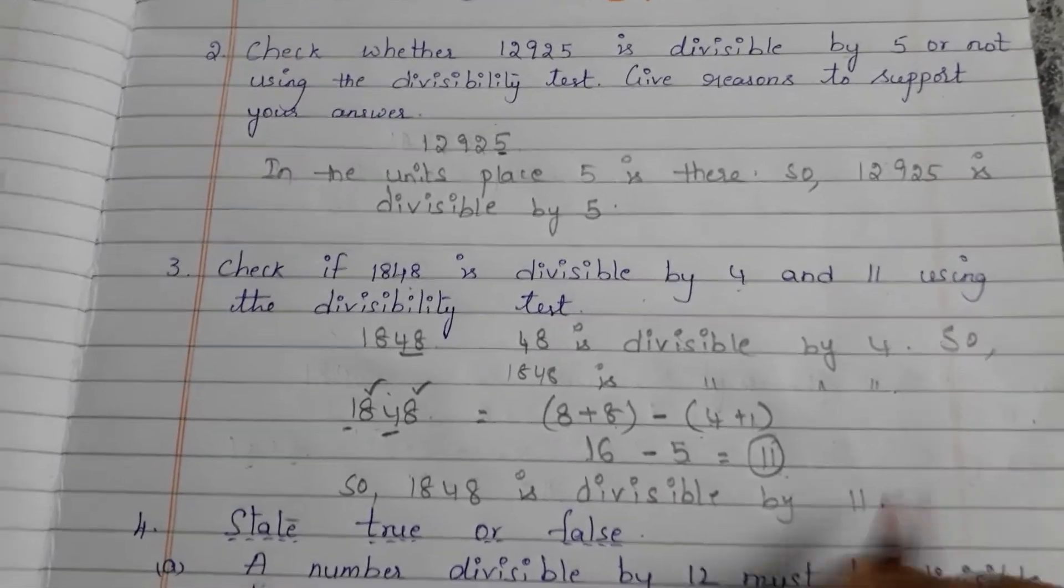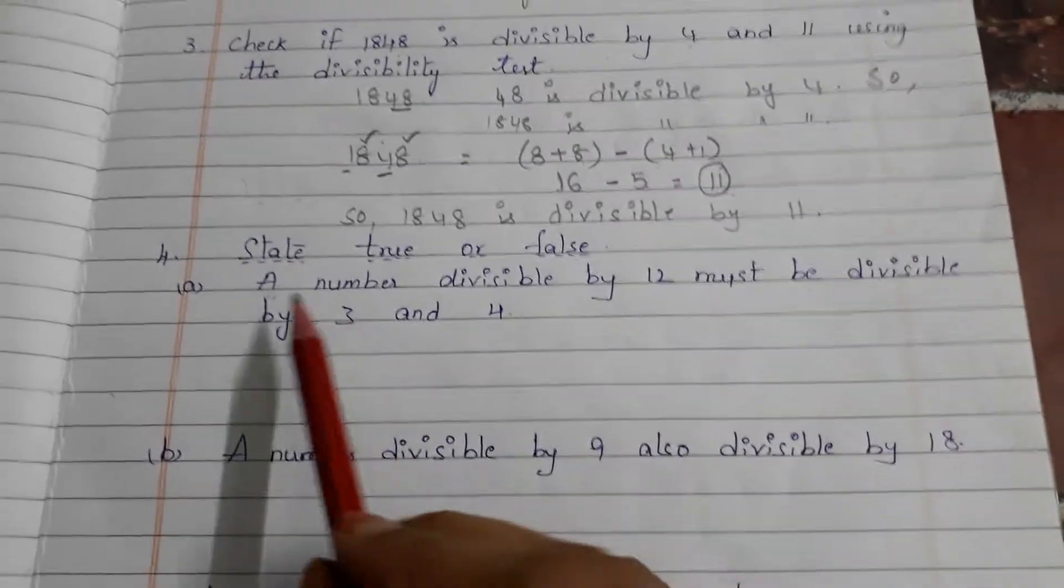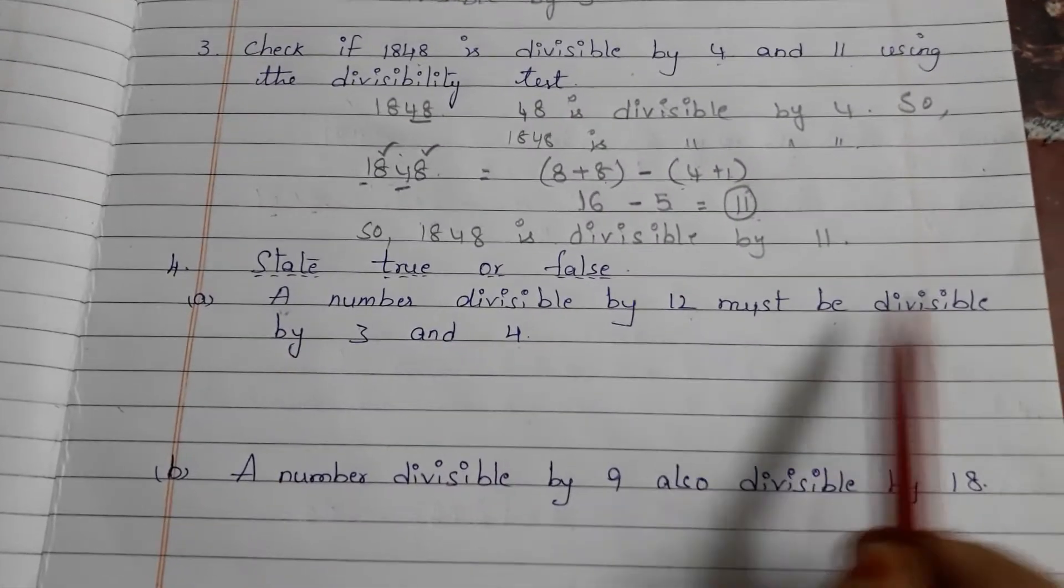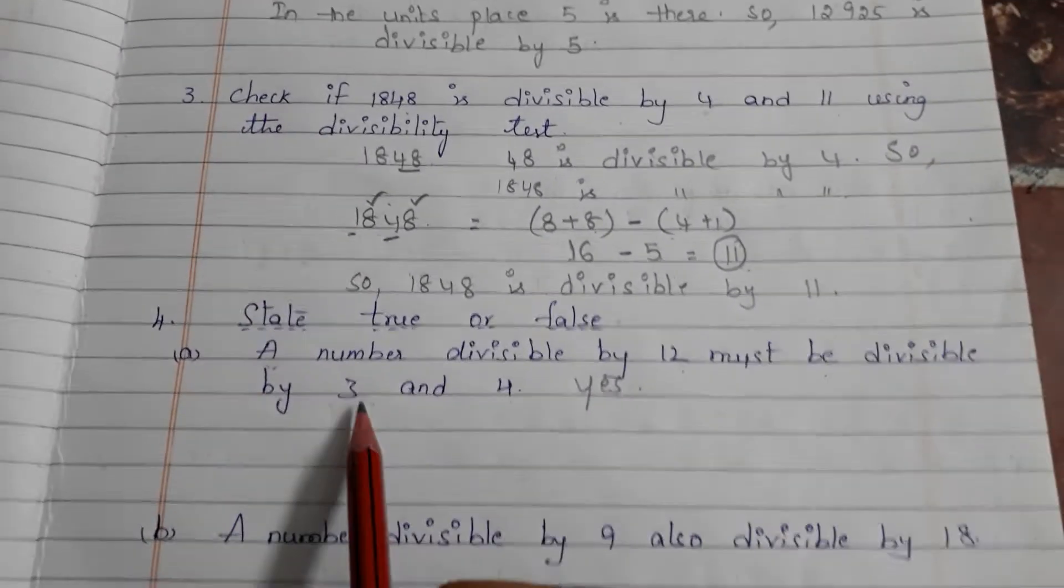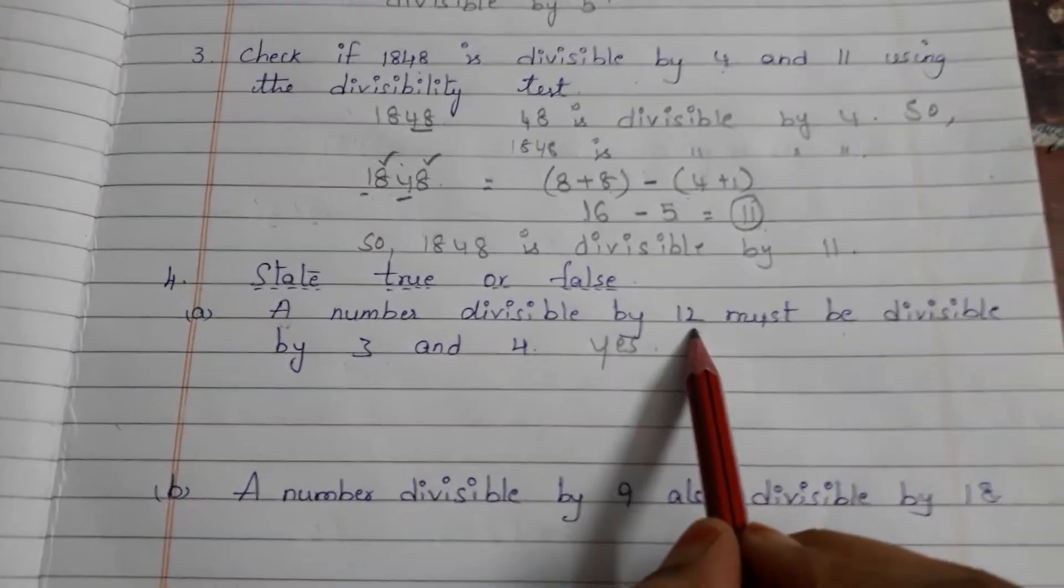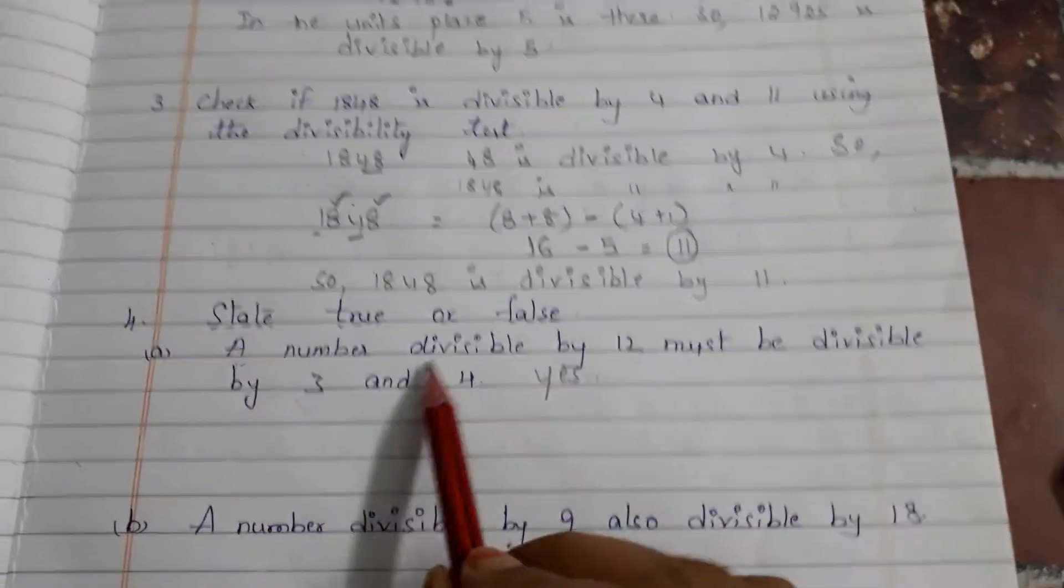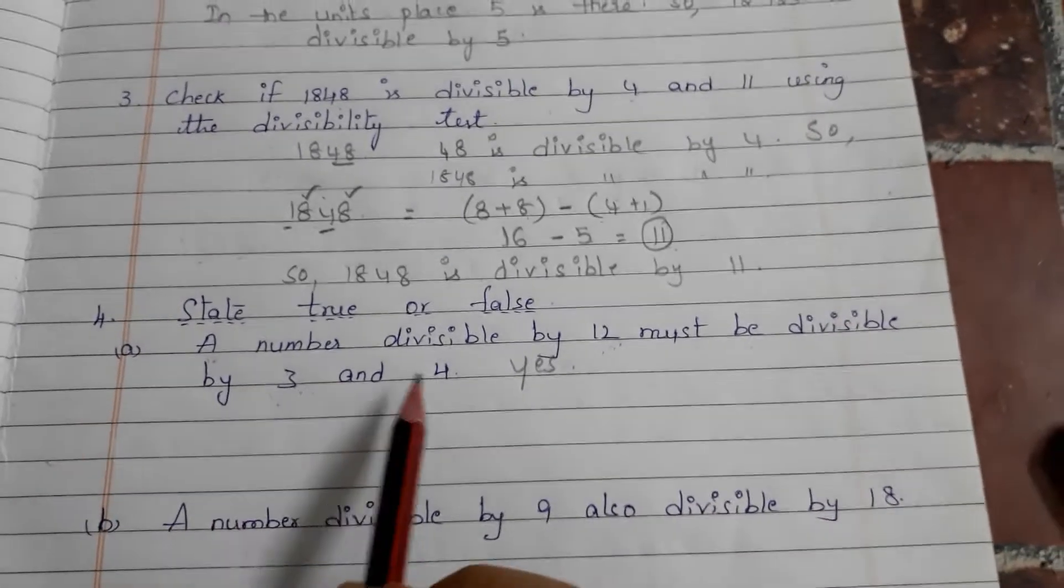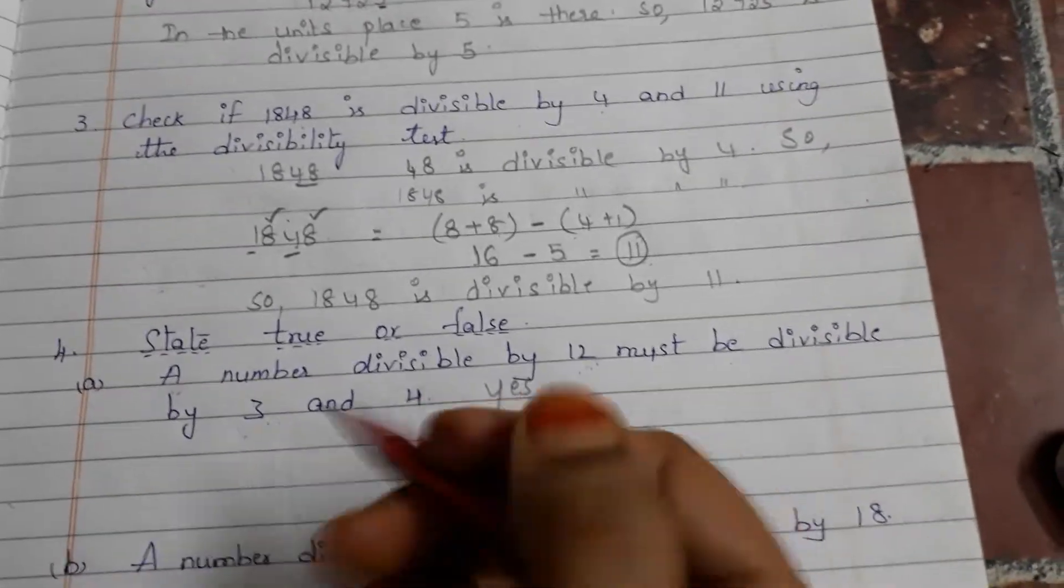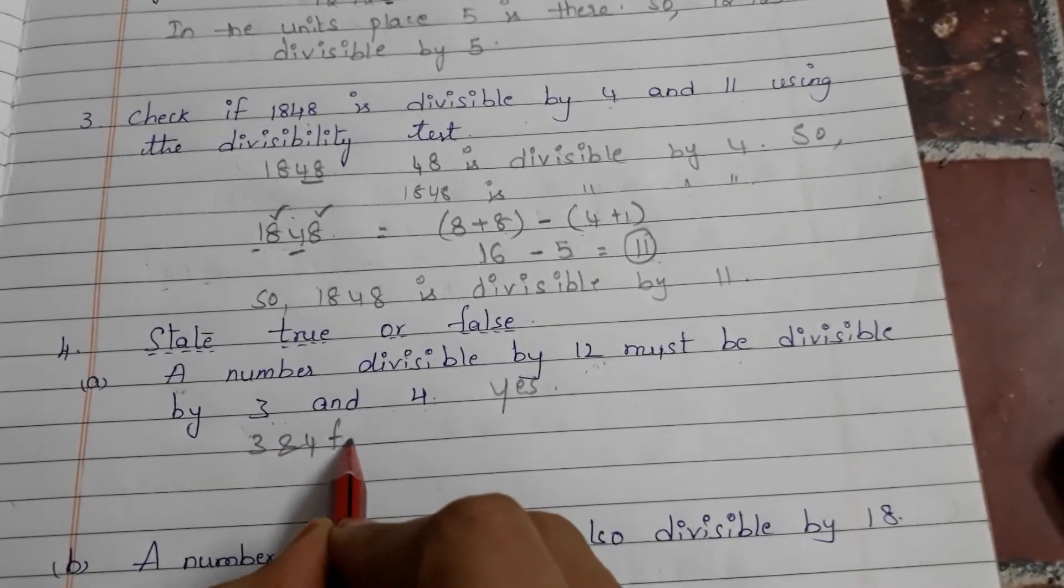Let us go to the fourth question: state true or false. A number divisible by 12 must be divisible by 3 and 4. This statement is correct. Why? Because 3 and 4 are factors of 12, so a number divisible by 12 is automatically divisible by 3 as well as 4. Write the reason: 3 and 4 are factors of 12.